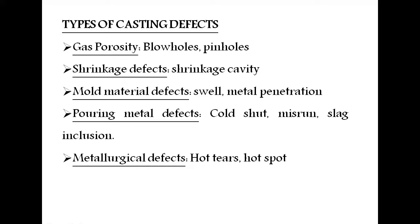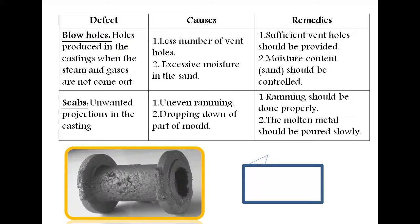Here are the types of casting defects: gas porosity, shrinkage defects, mold material defects, pouring metal defects, and metallurgical defects. We will discuss them one by one. First: blow holes — holes produced in the castings.